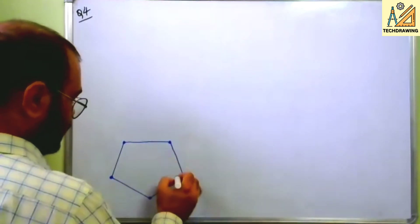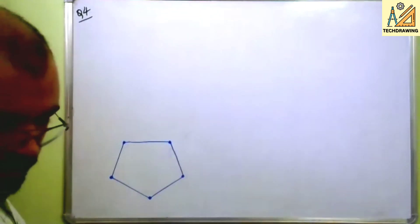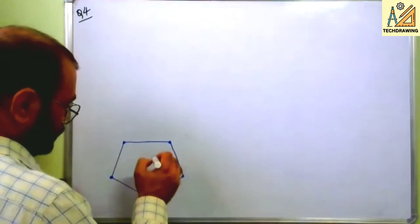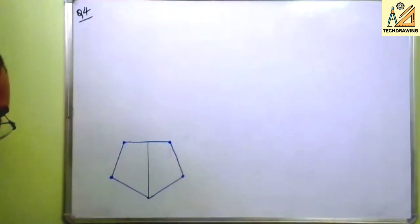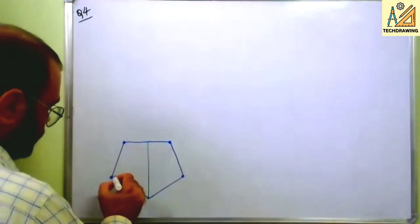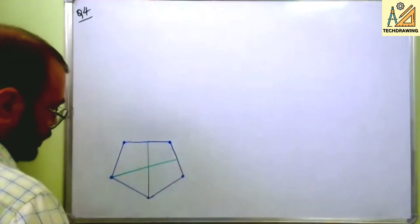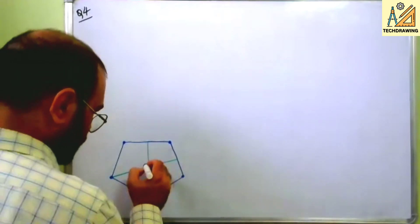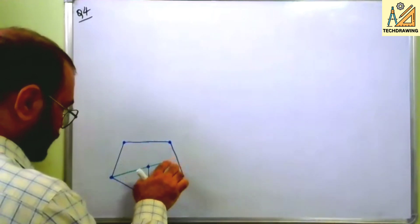For this pyramid you will have to find out the center of the pentagon. How will you find the center? Just draw a perpendicular from one of the corners to the opposite edge like this. Similarly from one corner to the opposite base. Wherever these intersect, this is the center. You can erase these.